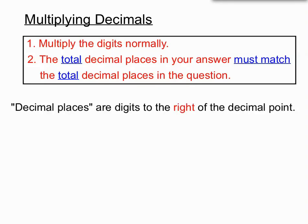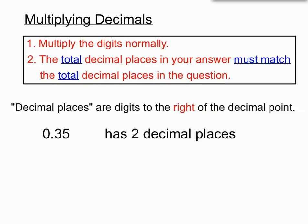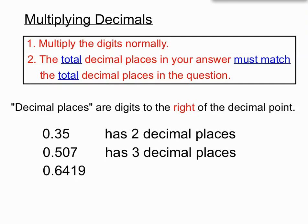Let's check what the phrase 'decimal places' means just in case we've forgotten. Decimal places are the number of digits to the right of the decimal point. So 0.35 has two digits to the right of the decimal point — two decimal places. 0.507 has three decimal places, and there's a number with four digits to the right of the decimal point, so it has four decimal places.